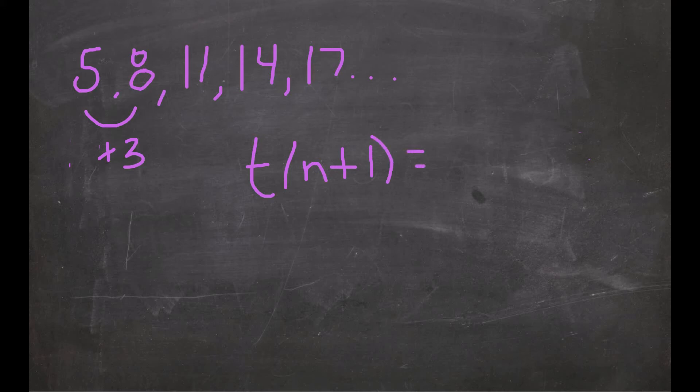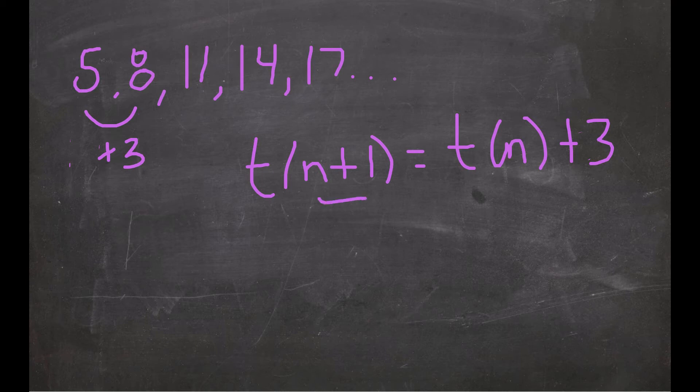T of n is our output values. So let's say we had the first term, which is 5. We know that we need to just add 3 to get the next term. So we can take T of n and add 3 to that to get the one after. That's why we have the plus 1. This plus 1 just tells us the next term in the sequence.